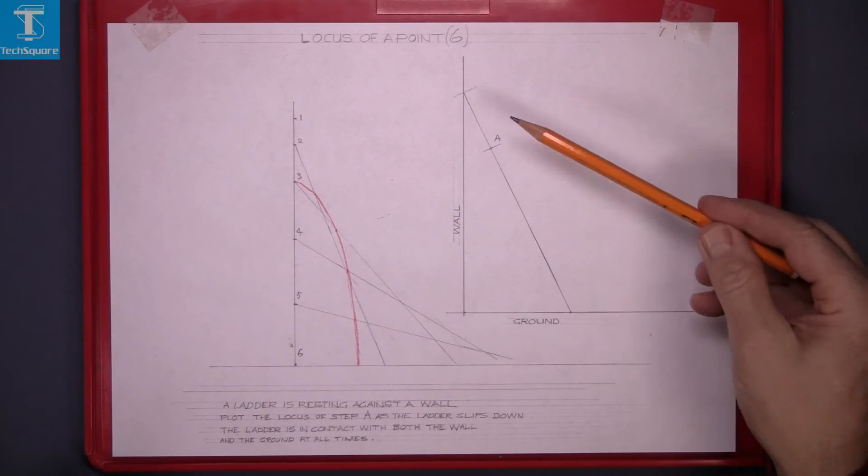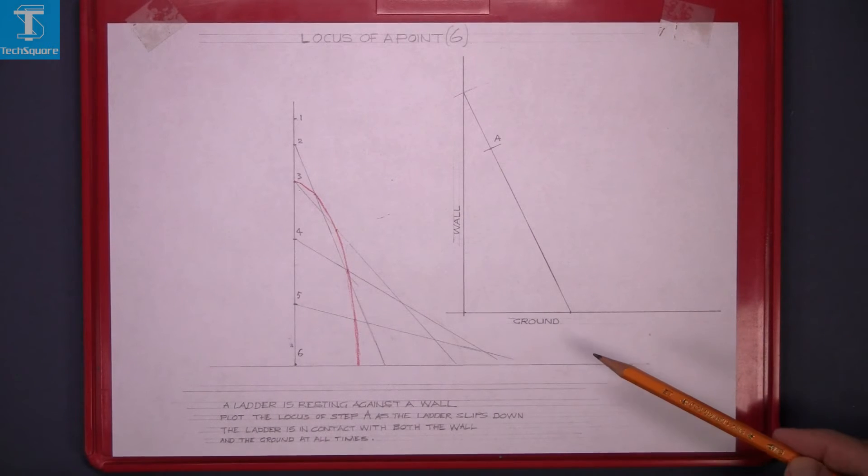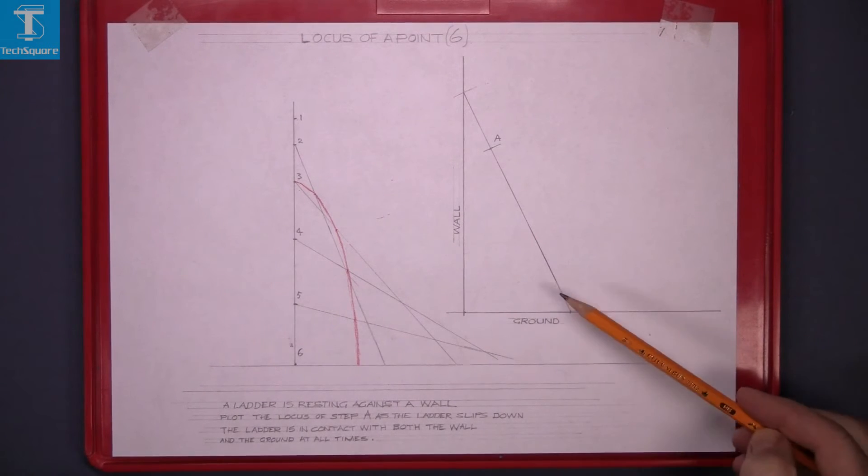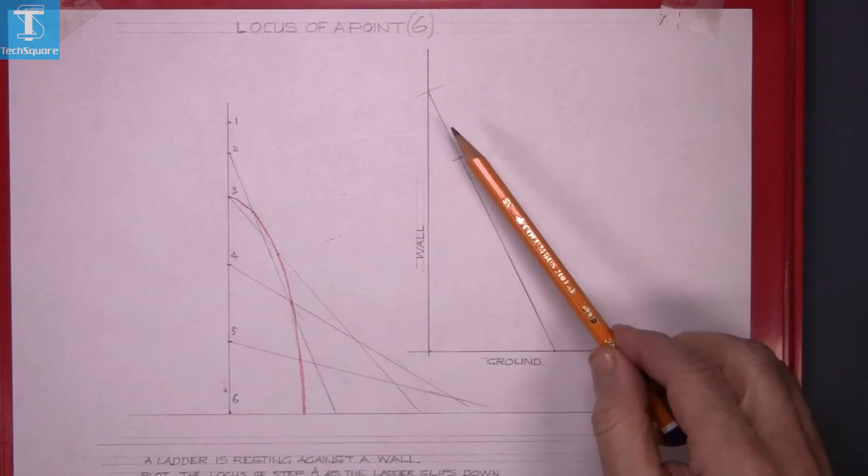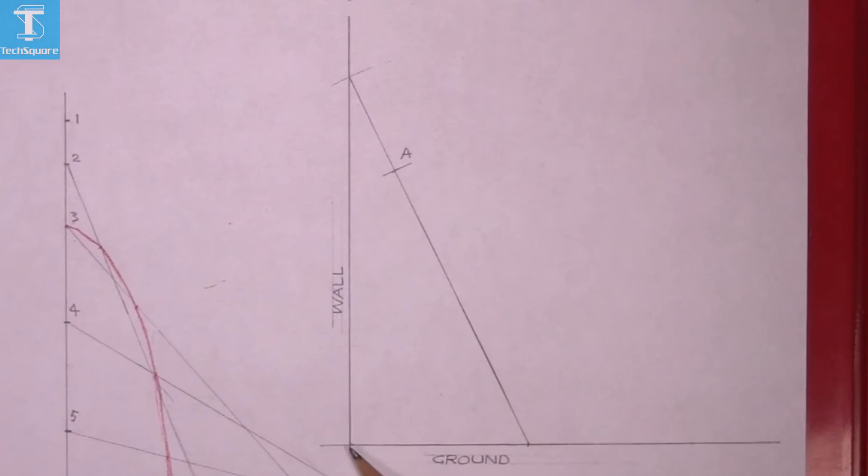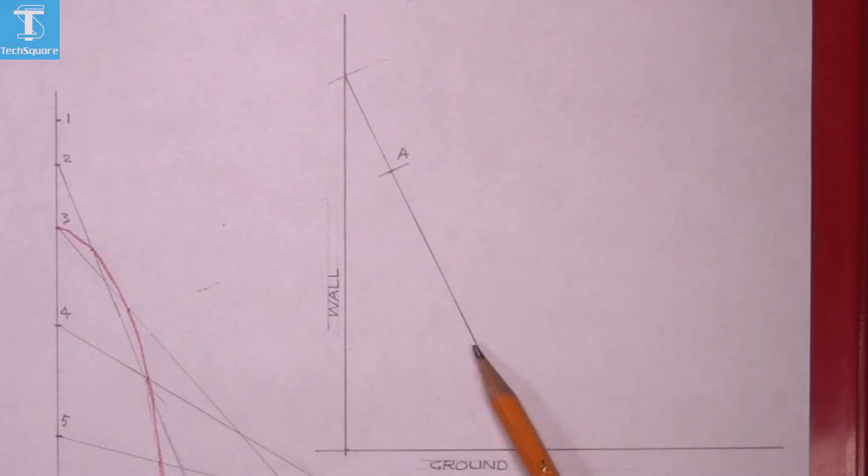Now this is the same question as it would appear on a paper without models or templates, given the line representing the wall and a line representing the ground and a line representing the ladder with point A marked on it.